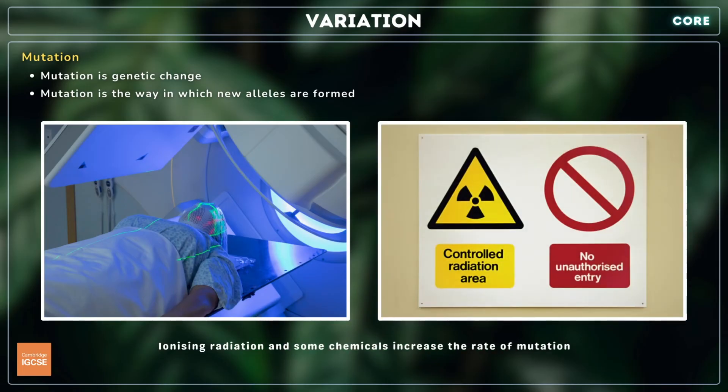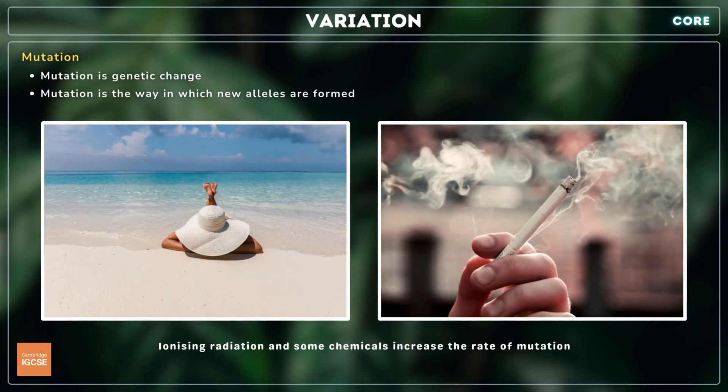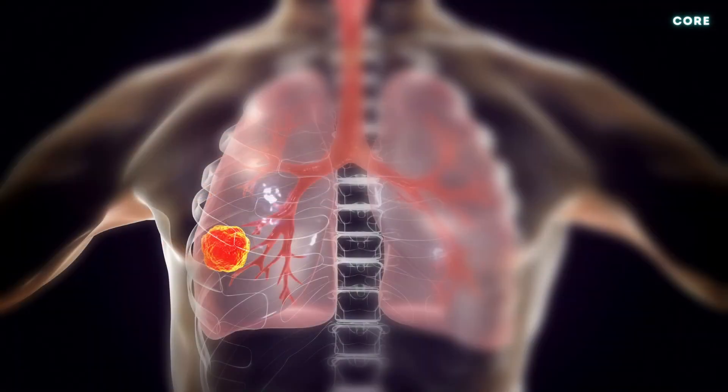The rate at which mutations occur is influenced by a variety of factors, including exposure to ionising radiation, like x-rays and radioactive compounds, UV radiation from sunlight, and certain chemicals. For example, many of the substances found in tobacco smoke are mutagens that can lead to cancer.